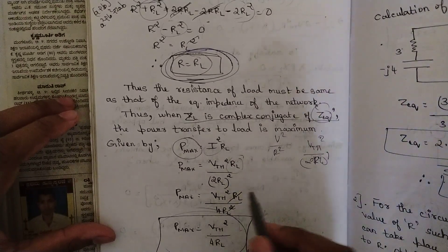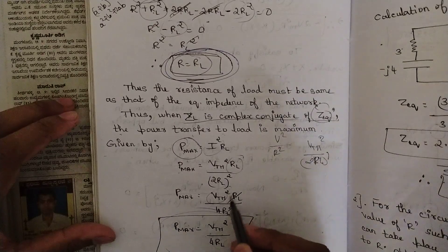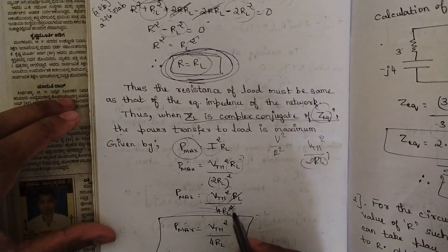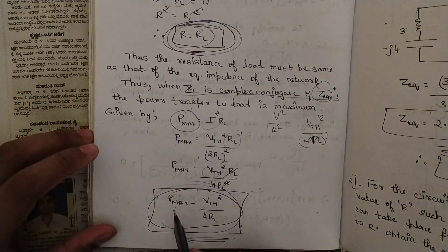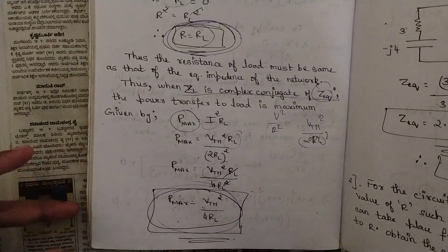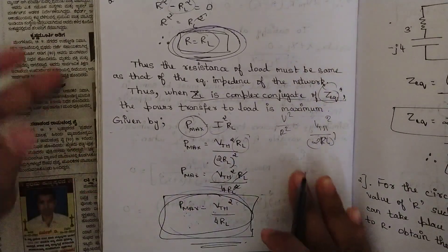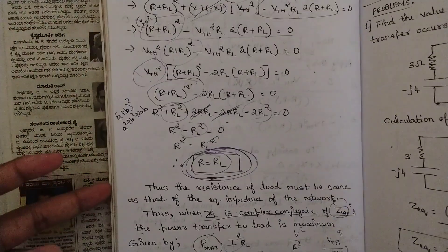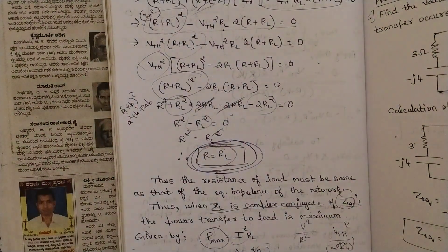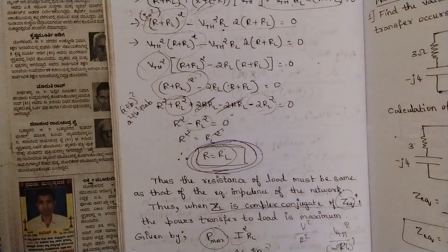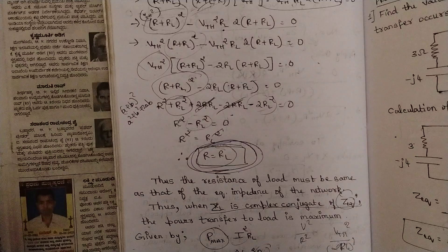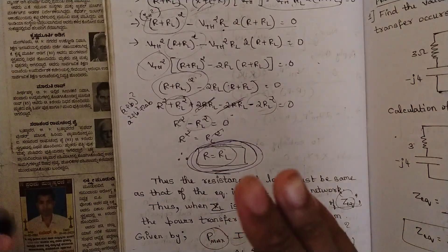Solving: V_th squared times R_L divided by 4R_L squared — one R_L cancels — leaving the maximum power equation: P_max equals V_th squared divided by 4R_L. This is the complete proof along with the statement of the Maximum Power Transfer Theorem. Like this video and share this to a large number — this theorem is a confirmed question for eight marks. Thank you.